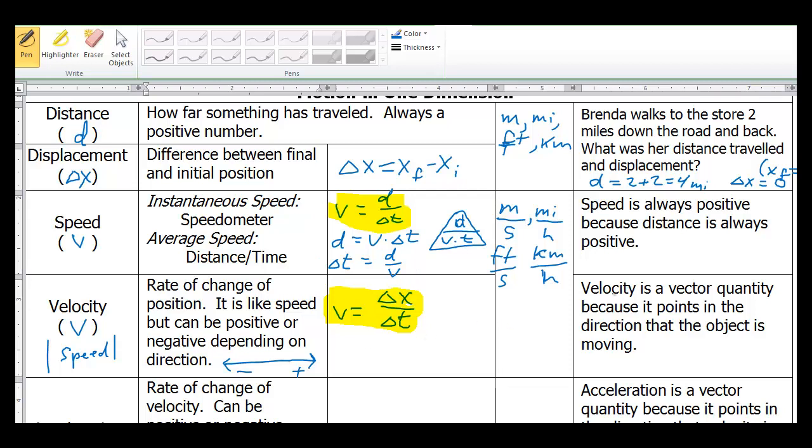The main point here is that velocity is a vector quantity because it points in the direction that the object is moving. So, that's why we have positive velocity going one way and negative velocity going the other way. And that becomes an important concept, especially when we study momentum.